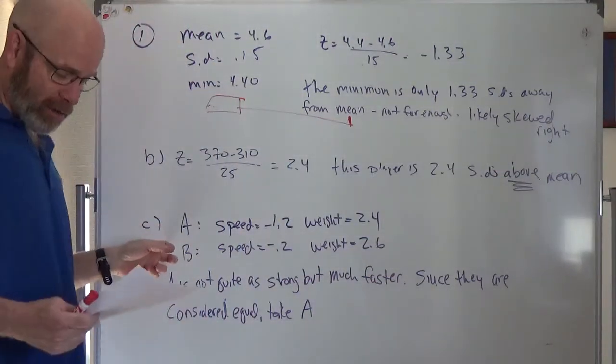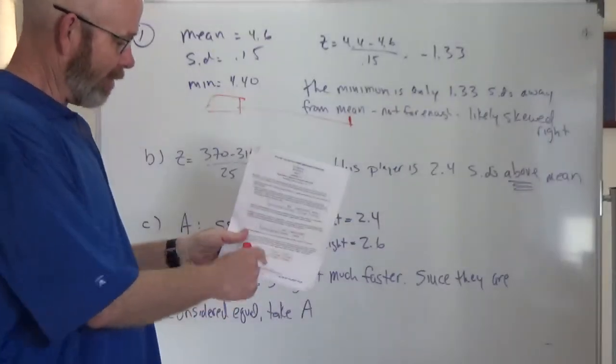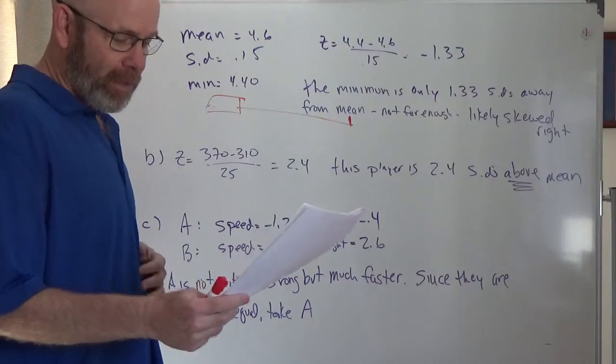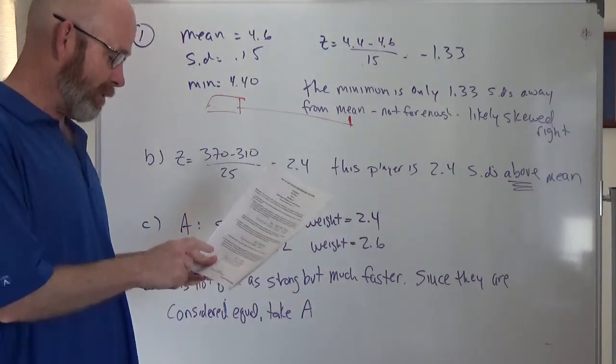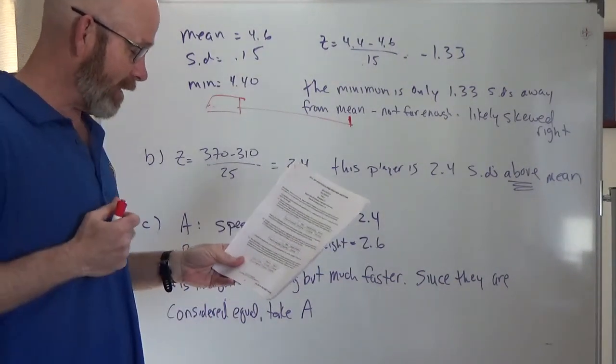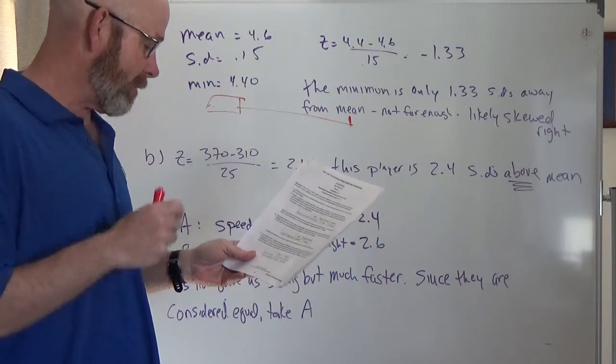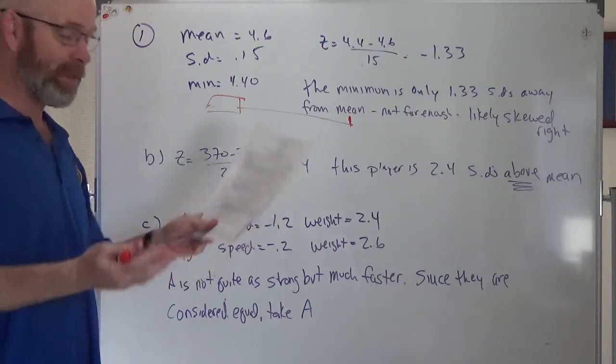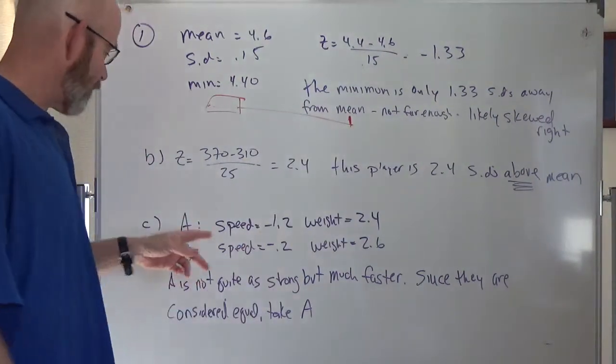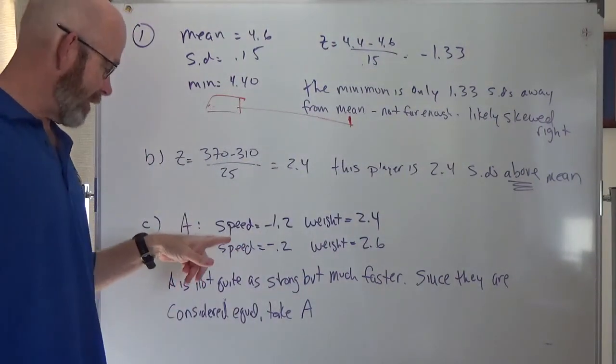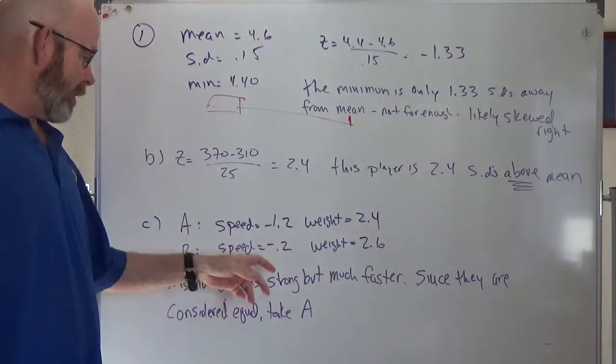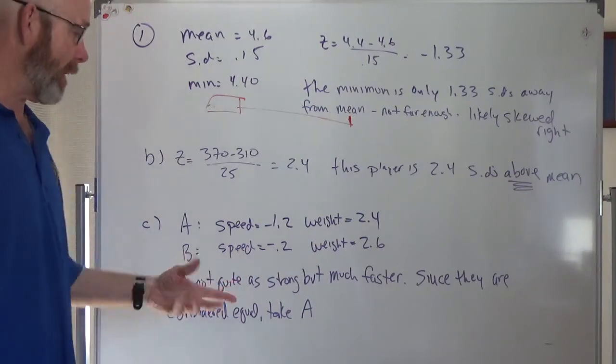And they give you these two players and they give you their running time and their lifting time. I already did the math, just kind of want to go through all of it. So time to run 40, how much they lifted. And then it said running and lifting were about the same importance. So who do you pick? So I found their z-scores. So a z-score, speed was negative 1.2, weight was 2.4. Speed here was negative 0.2, weight was 2.6. Who do I pick?